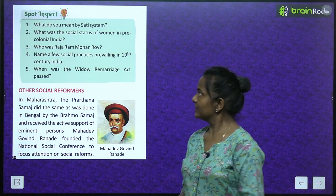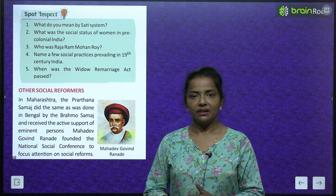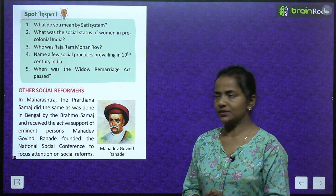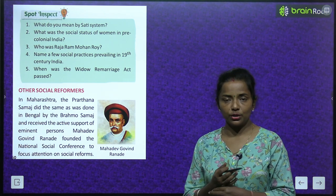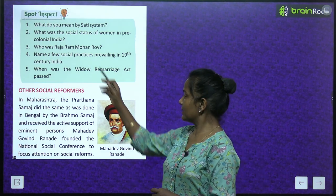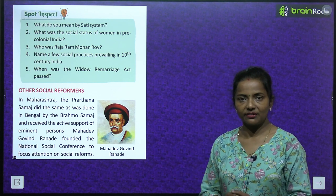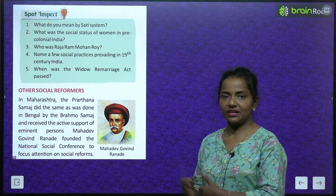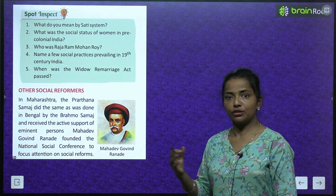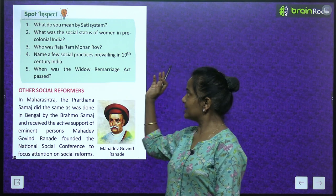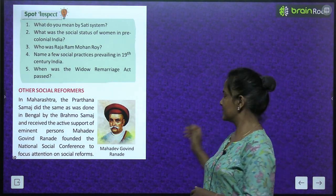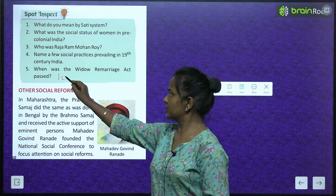Spot inspect questions: What do you mean by the sati system? The widow whose husband died had to sit in the funeral pyre with him. What was the social status of women in pre-colonial India? Social status of women was very low. Who was Raja Ram Mohan Roy? He was a social reformer who worked to ban the sati practice. Name a few social practices prevailing in the 19th century. When was the Widow Remarriage Act passed? It was passed in 1856.